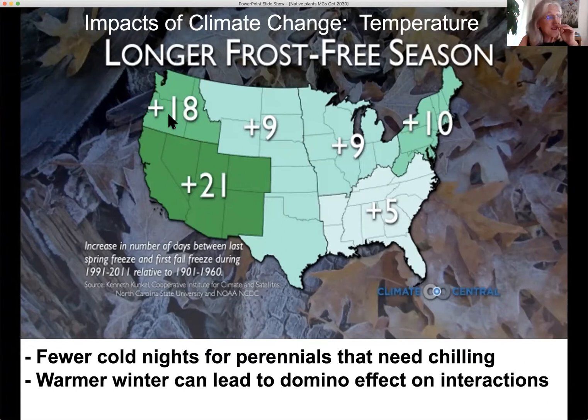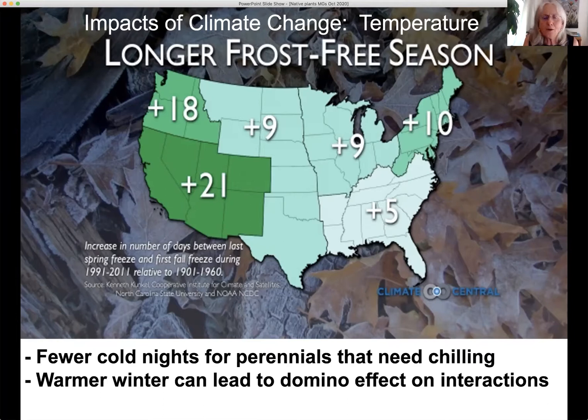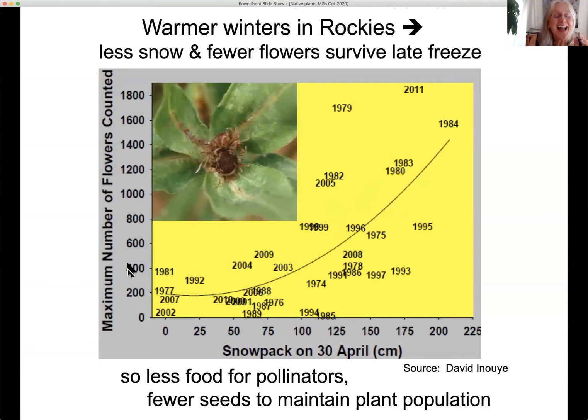A longer frost-free season means higher temperatures, which is one reason they're having serious droughts and fires out in the West. Longer frost-free season also means fewer cold nights for perennials — especially fruit trees — that need chilling. Most importantly for this talk, warmer winters can lead to a big set of domino effects on interactions between species, which I'll give you an example of right now.